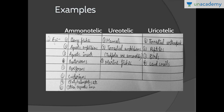Now let's look at some examples of the three categories. Ammonotelic organisms are aquatic organisms living in an abundance of water. This includes bony fishes, aquatic amphibians, tadpoles, aquatic insects, and all aquatic invertebrates across all phyla — from poriferans onward. Ureotelic organisms include mammals, and importantly, marine fishes.